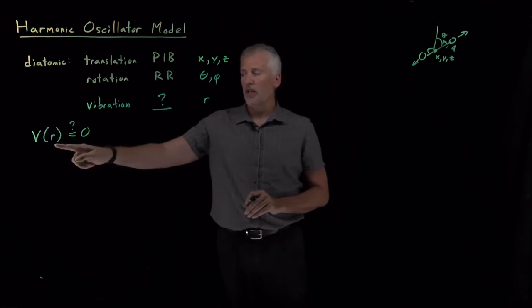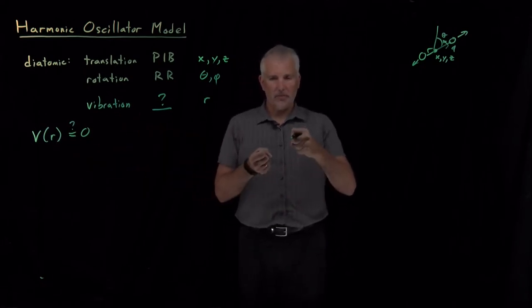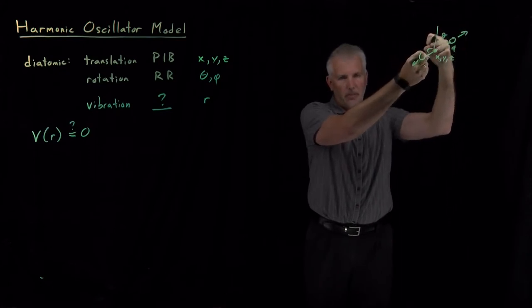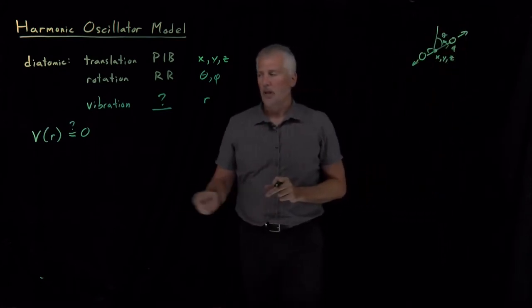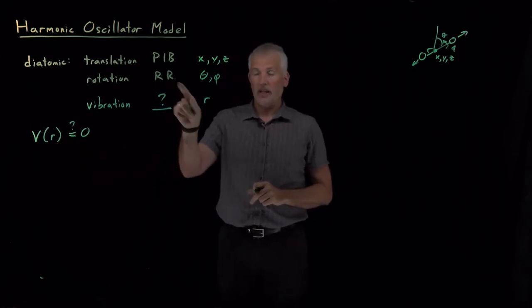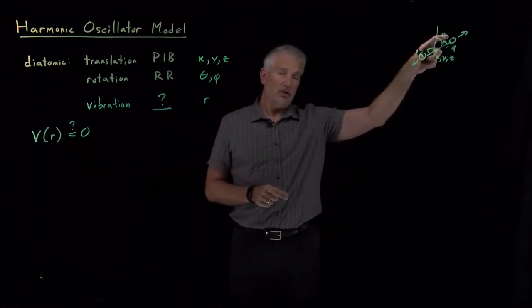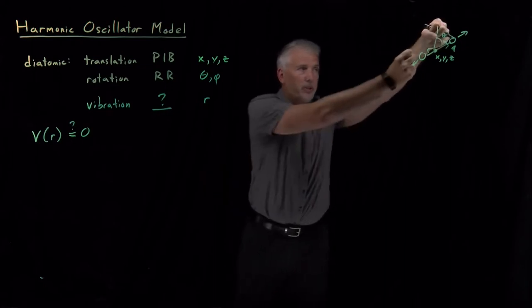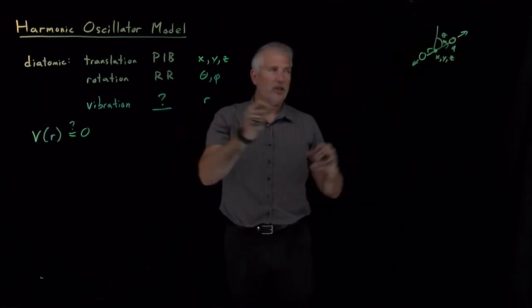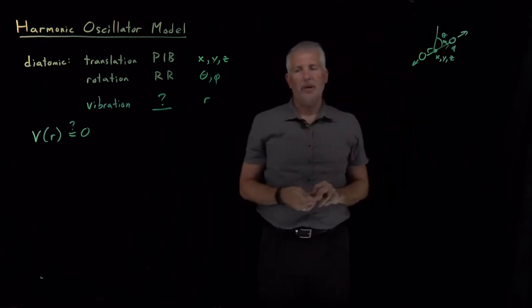If you think about how the potential energy of the molecule changes as I change its bond length, so if I have a diatomic molecule, if I stretch it or if I compress the bond, thinking about what happens to the potential energy of the molecule is definitely going to change, unlike rotation where I shouldn't really expect the energy of the molecule to be different if I just place the molecule at a different orientation or translation if I just move it to a different position in the box.